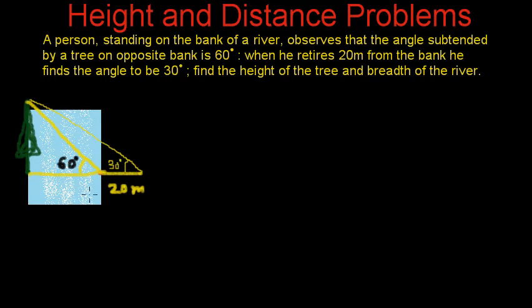We have to find the width of the river, which is this distance. Suppose this is x. And we also have to find the height of the tree. Let me call it h. So we have to find h and x, right?